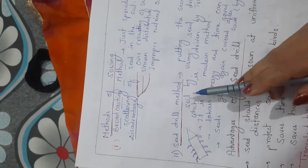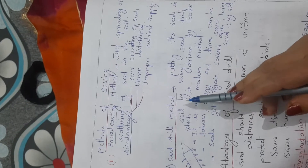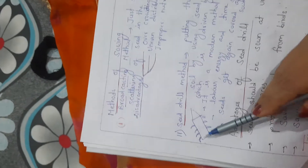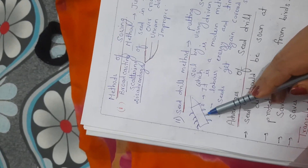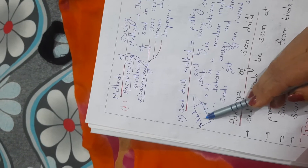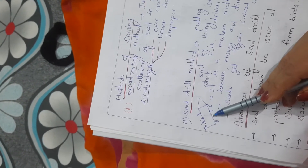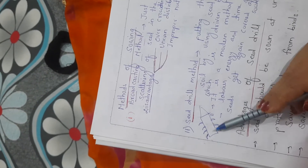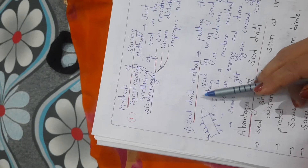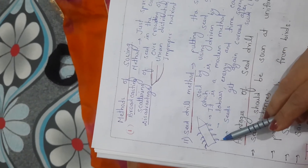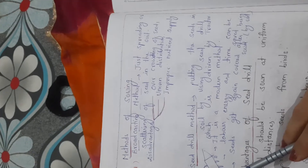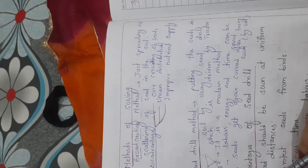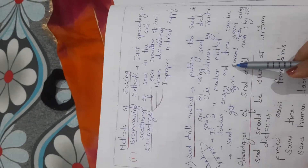Nowadays the seed drill method is used, which is called the modern method. The seed drill is an agricultural implement which has sharp ends and is driven by tractors. When we put seeds in the seed drill, seeds are sown at proper depth and proper distance, and after sowing the seeds they are covered by the soil, which prevents them from birds and animals so that they will not be destroyed.